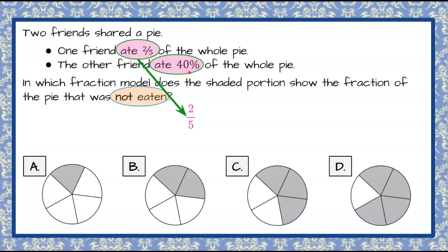The second friend ate 40%. Well, we're going to write 40% as a fraction so that we can compare this. So 40% is 40 out of 100. When we divide both the numerator and denominator by 10, that becomes four-tenths. And then both four and 10 are evenly divisible by two, giving us two-fifths. So 40% is the same as writing two-fifths.